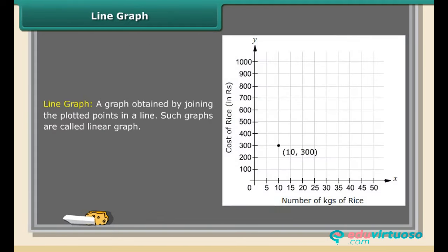Line graph: A graph obtained by joining the plotted points in a line. Such graphs are called linear graph.